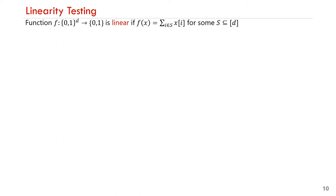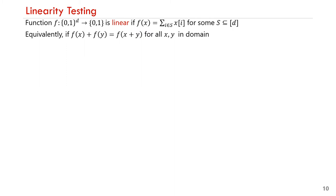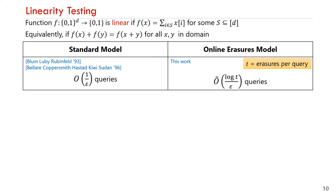We consider Boolean-valued functions whose domain are bit strings of length d. Such a function is linear if f(x) can be written as the sum of bits x_i for some subset S of the bits. Equivalently, a function is linear if f(x) + f(y) = f(x+y) for all x and y in the domain. Linearity testing has been widely studied due to its connections with probabilistically checkable proofs and hardness of approximation results. In the standard property testing model, linearity testing can be done with O(1/epsilon) queries. The tester was first introduced by Blum, Luby, and Rubinfeld, and its analysis was later improved by Bellare, Coppersmith, Hastad, Kiwi, and Sudan.